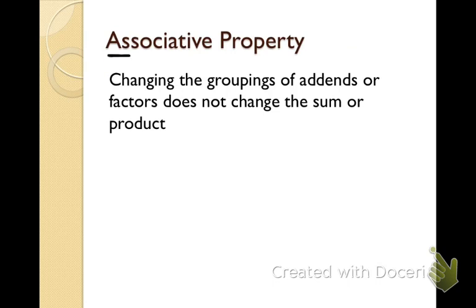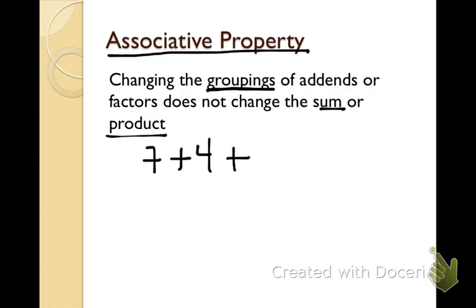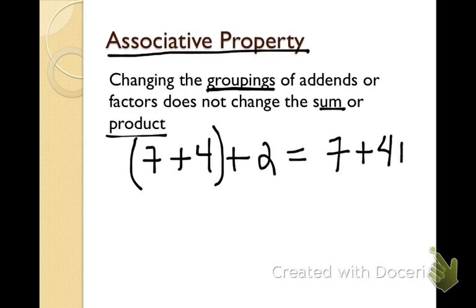We have another property called the associative property. The associative property looks at changing the groupings of adding or multiplying, and that does not change the sum or the product. For example, 7 plus 4 plus 2 — I could group 7 plus 4 first, but for me it's easier if I change my grouping. Keeping the numbers in the same order, I change the grouping to get 7 plus (4 plus 2), which gives 7 plus 6 equals 13. It's just easier to do the math when I change my groupings.